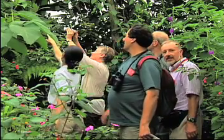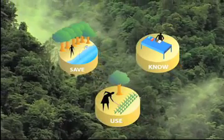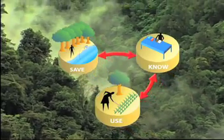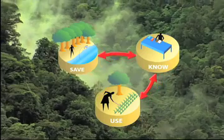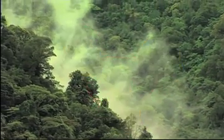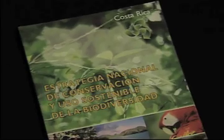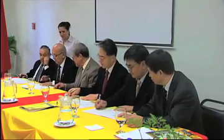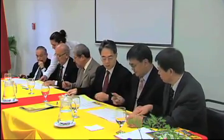MBEO's work is based on the trilogy Save, Know, and Use — the three pillars of Costa Rica's national conservation strategy for sustainable development. This Costa Rican institute has become a leader in conservation of biodiversity both at a national and international level.